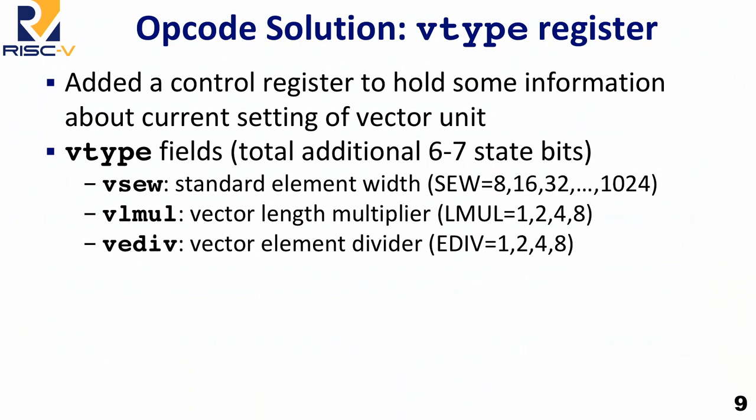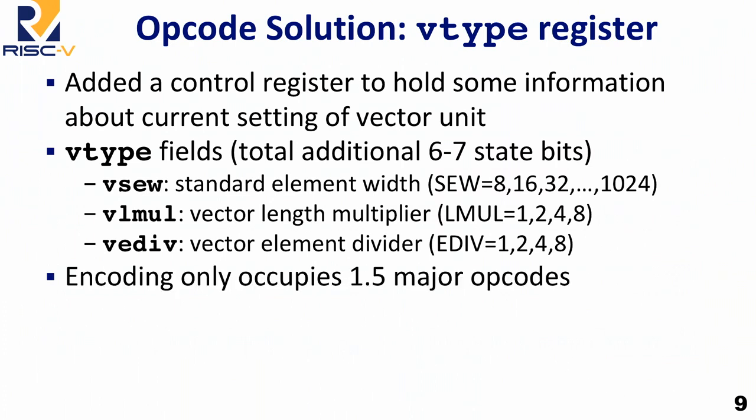The solution was to split out into a V-type register, which encodes — you can view this as holding some part of the instruction encoding — that you set before you use the main operation. There are six or seven extra state bits encoding the width of elements: 8-bit, 16-bit, 32-bit, with room for up to 1-kilobit elements. The second field is called the vector-length multiplier LMUL, which lets you group multiple vector registers into a vector register group to give you effectively longer vectors — also used for mixed precision. Finally, there's the EDIV concept of dividing an element into sub-elements. As a result, we managed to pack the encoding into only one-and-a-half major opcodes.